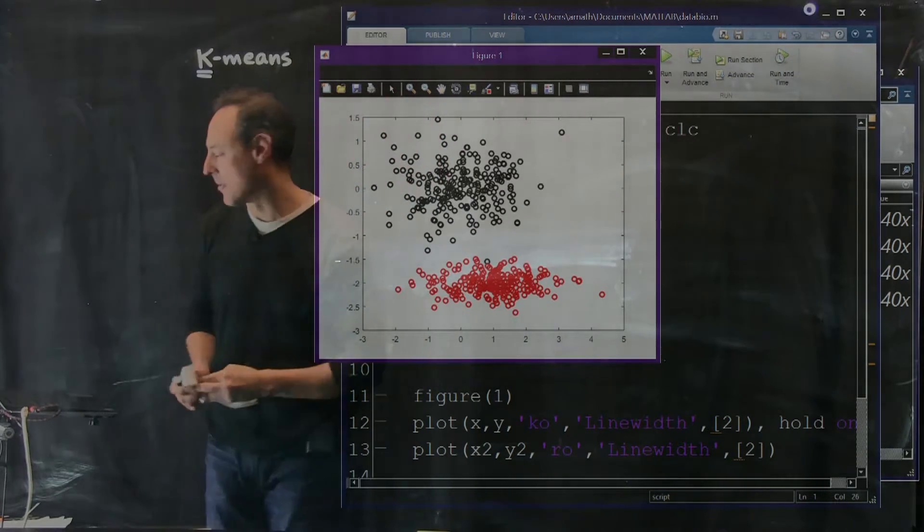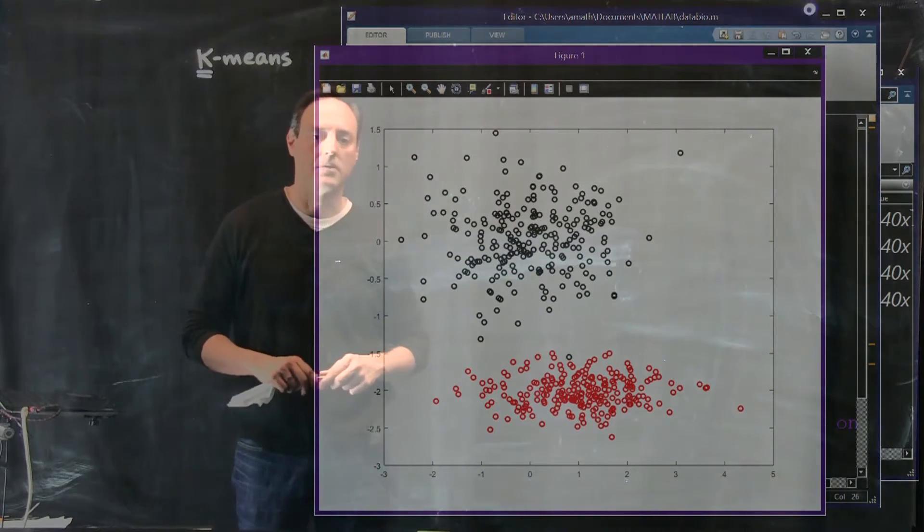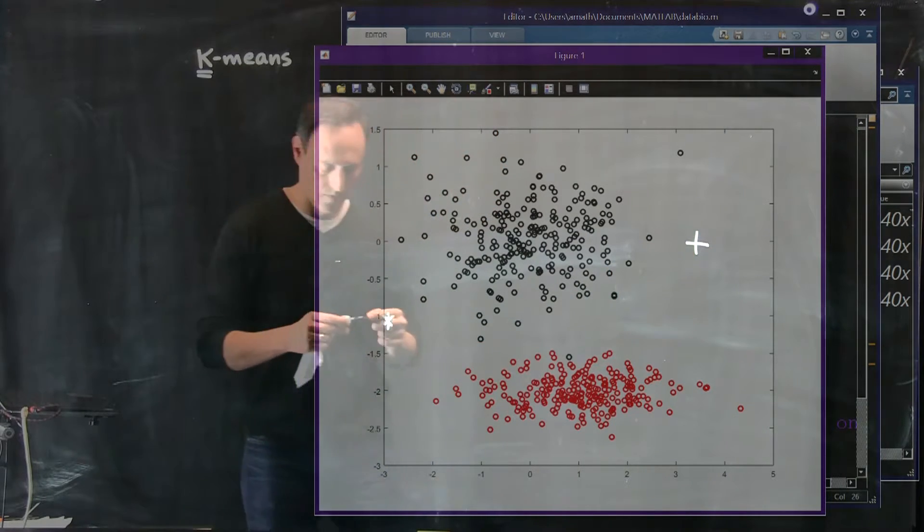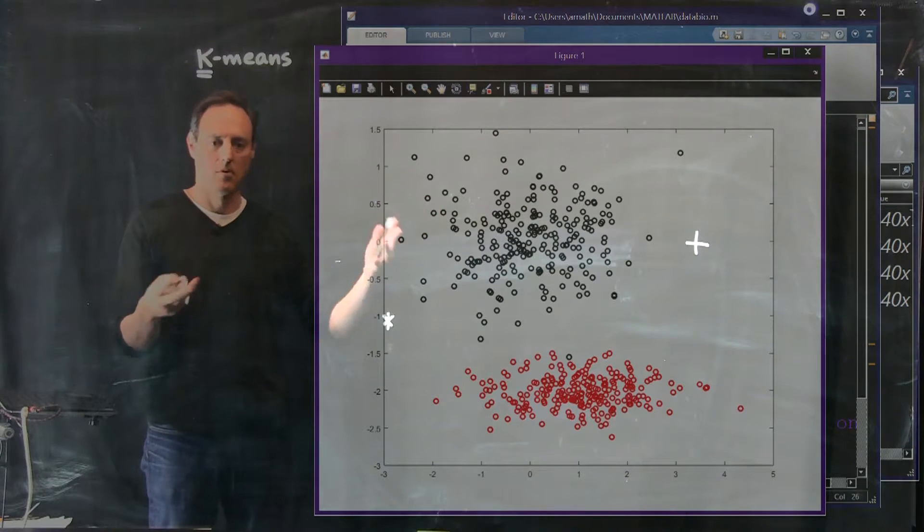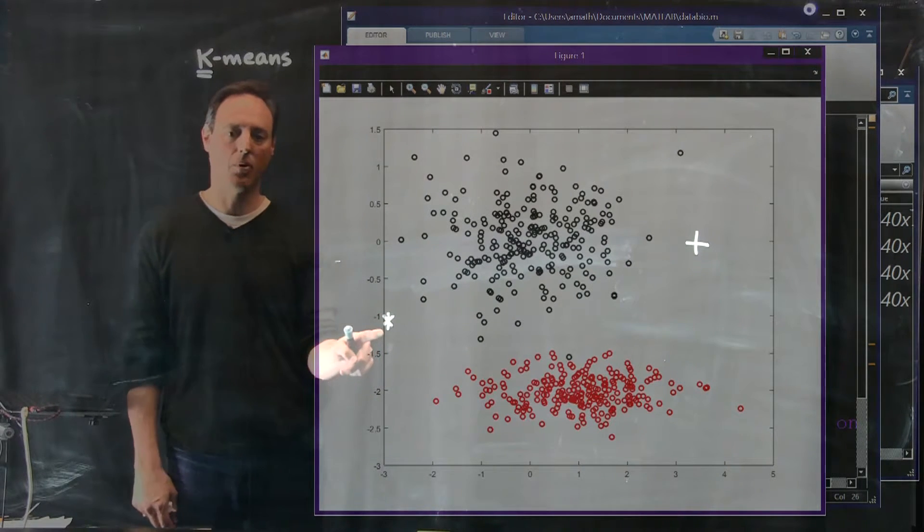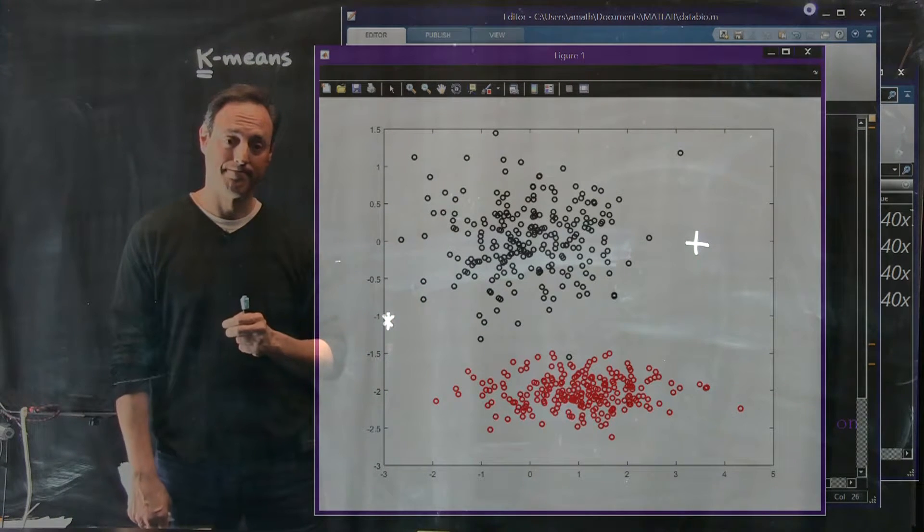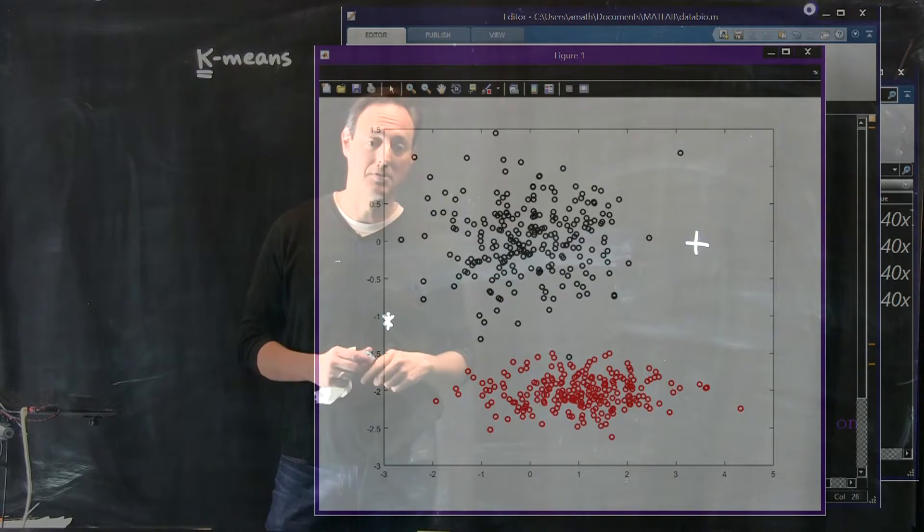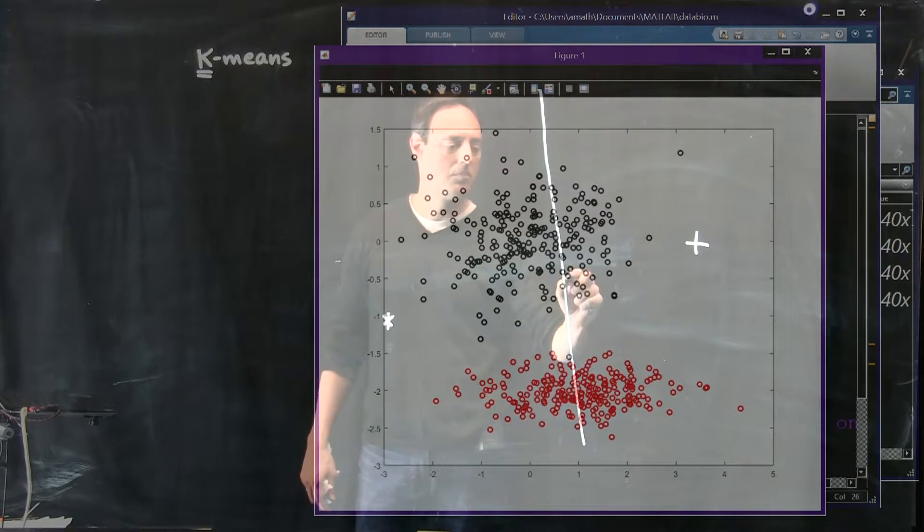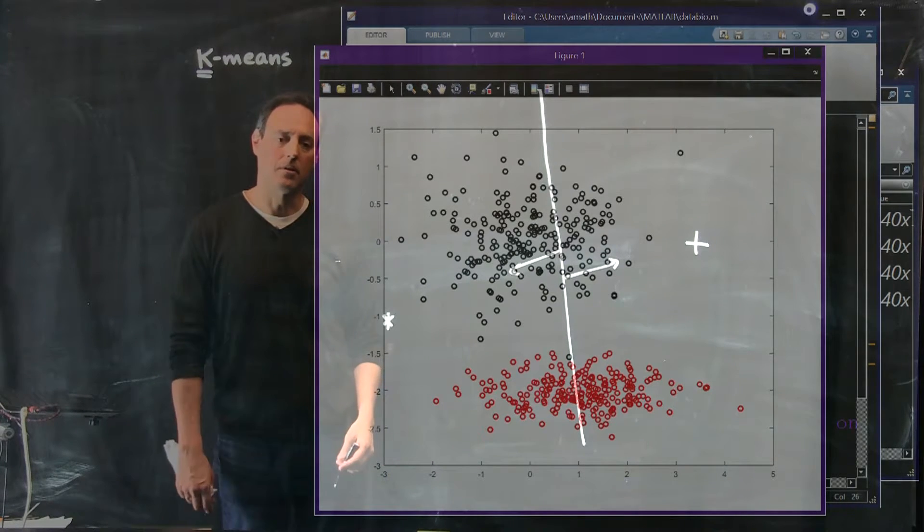So what the algorithm does, it just says, okay, fine. What I'll do is I will pick two initial spots for where the means are. So in this data here, I'm going to blow this up just so we can look at it more carefully. I can just pick two random points. Let's say here with a star and over here with a plus. These, of course, are wrong. The clusters aren't even near those points.